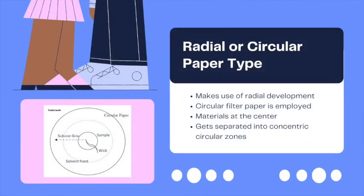The third one is radial paper, also known as circular paper chromatography. This makes use of radial development. In this technique, the circular filter paper is employed. Then, the various materials to be analyzed are placed at the center.